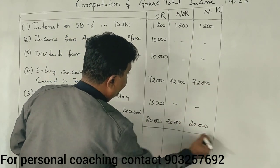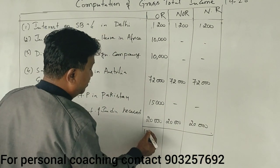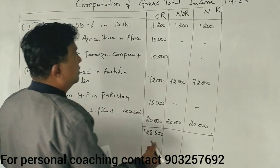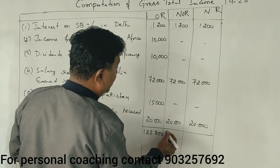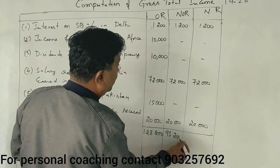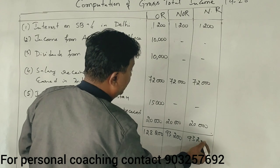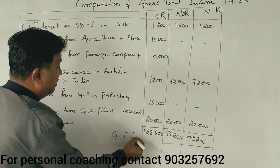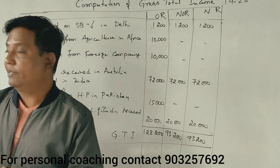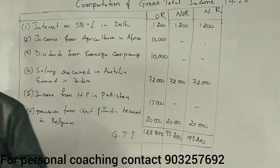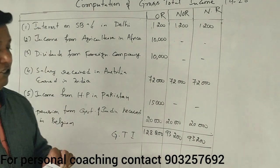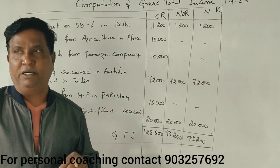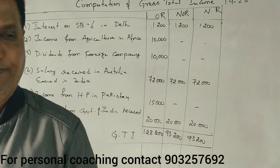Total amount: ₹1,28,200. The calculation comes to 28,200, 200, and 93,200. It's not right — it's only 14 months. So next lesson. The salary income is to be noted. Thank you.